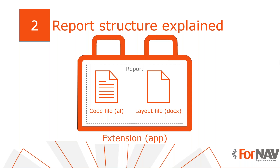The first thing we need to do is have a look at the structure of 4NAV reports. Every Business Central report, whether it's a 4NAV report or not, consists of two parts. Firstly, there is the code object that contains the report's dataset, the tables it's connected to, and the code to find, filter, and get the data you need. Secondly, there is the layout file that contains all the information that 4NAV needs to render the report. Both files are packaged in an extension app file. Extensions are the basic building blocks of Business Central — every object in Business Central, tables, pages, etc., is inside an extension. So every 4NAV report needs to be placed inside of an extension.